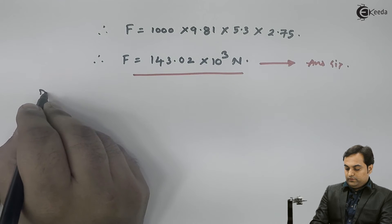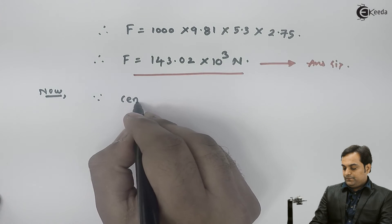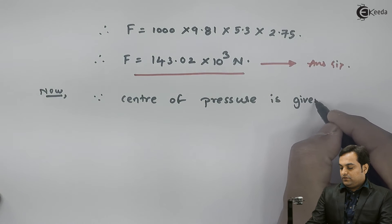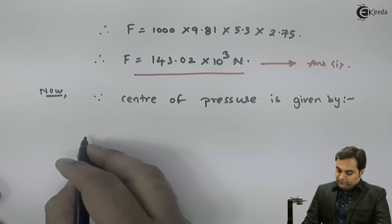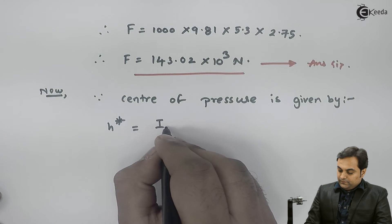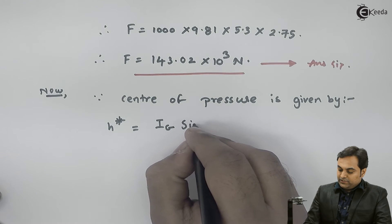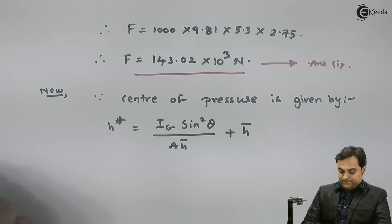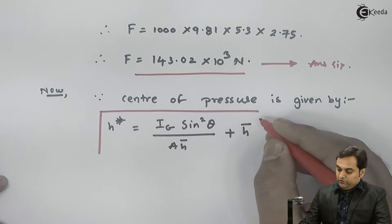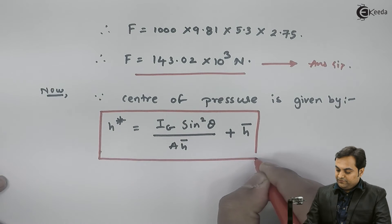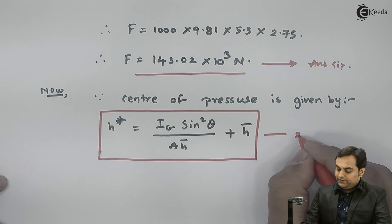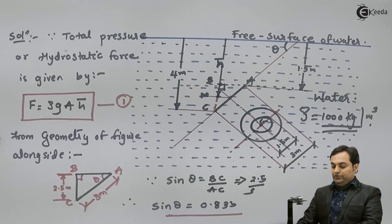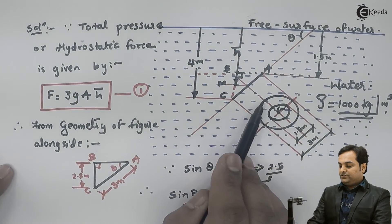Now for the center of pressure. The formula for center of pressure for an inclined plate is: H star equals IG times sin squared theta divided by (A times H bar), plus H bar. This is equation number two. Here IG is the moment of inertia of the hollow circular section about the centroid, which we need to calculate.